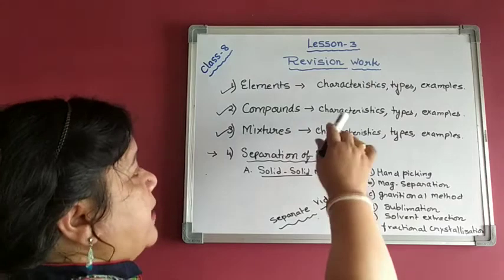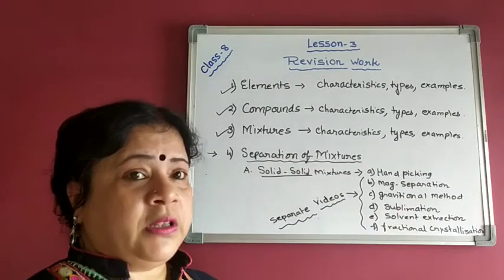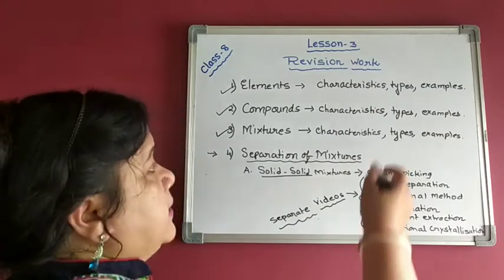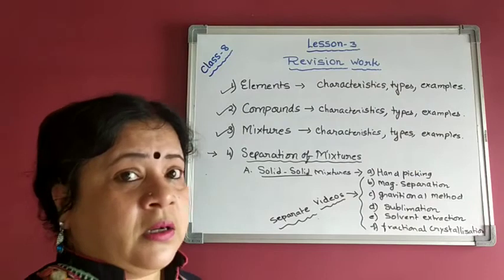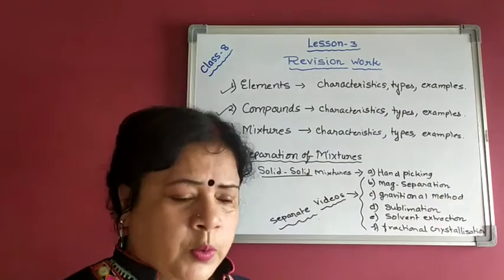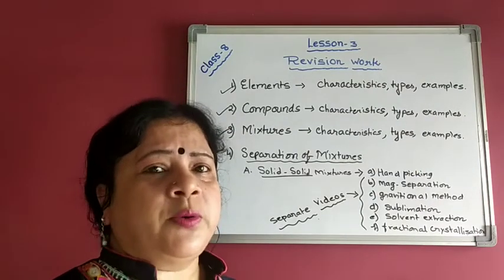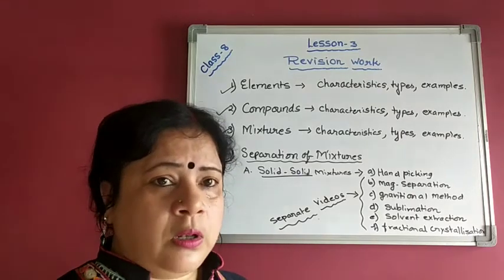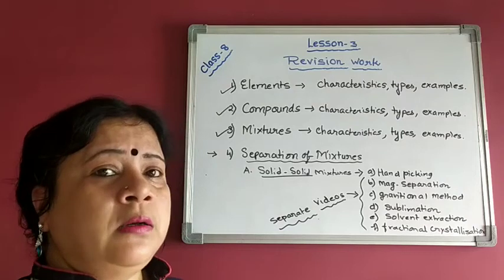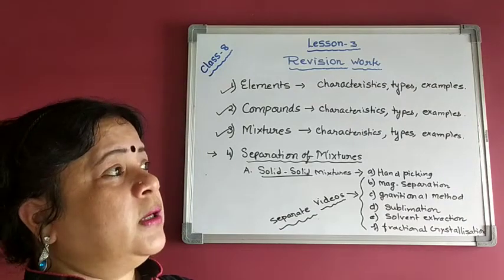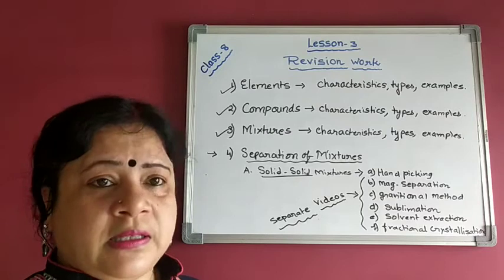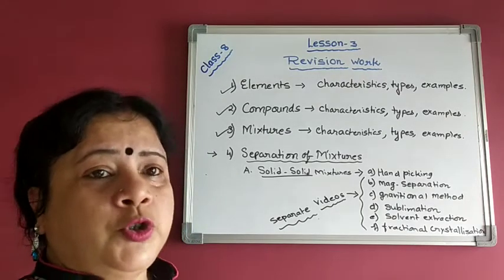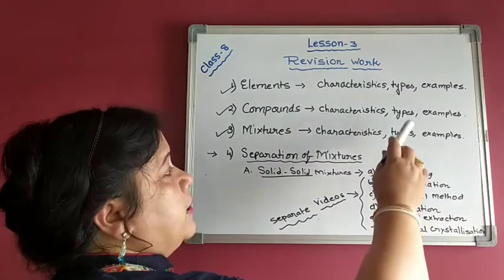Coming to compounds, we have covered the characteristics of compounds and how compounds are not the same as the elements from which they are made. For the types of compounds, you are required to know the names only — that is, inorganic and organic compounds. Carbon-dealing compounds are all organic compounds, and compounds formed from minerals are known as inorganic compounds.